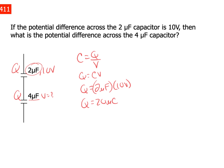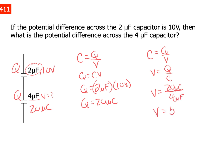The four microfarad capacitor has the same charge, so it will also have 20 microcoulombs on it. Now that I know the charge, I can calculate the voltage. Capacitance is defined as the ratio of charge to voltage, so voltage equals charge divided by capacitance. The potential difference across the four microfarad capacitor equals 20 microcoulombs divided by four microfarads, which gives five volts.